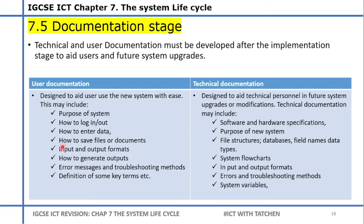User documentation contains: the purpose of the system, how to gain access, how to enter data (scanning, typing), how to save files, input and output formats, how to generate output, error messages and troubleshooting, and definitions of key terms. Technical documentation covers software and hardware specifications that users might not understand, the purpose of the new system, file structure, databases, field names, data types, system flow charts, input and output formats, error and troubleshooting methods, and system variables that need to be changed.